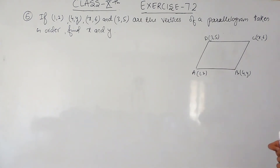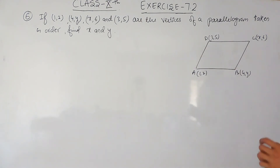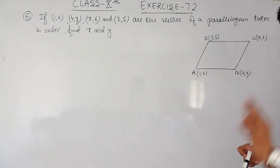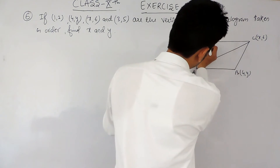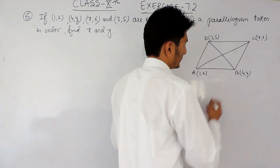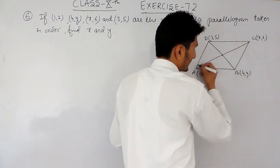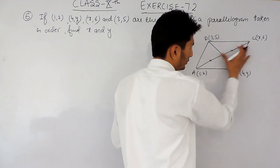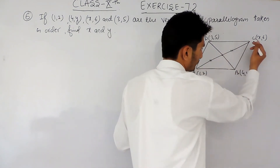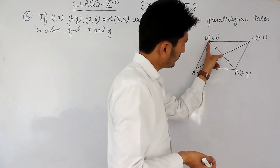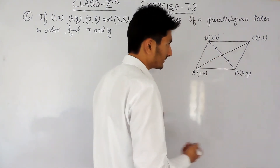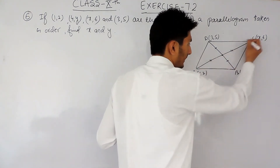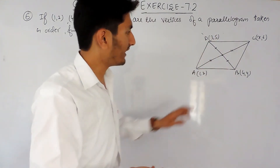There is another property regarding parallelogram which gives a comparatively shorter method. The diagonals of a parallelogram bisect each other. If I draw one diagonal and another diagonal, they will bisect each other — meaning their intersection point is the midpoint for both diagonals. So this point acts as the midpoint for both lines. Using this property, you can find the values of x and y.